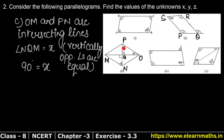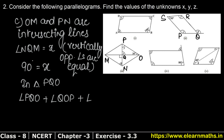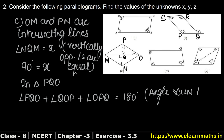If we talk about triangle PQO, this angle at Q is 30 degrees, so we can find the third angle y. In triangle PQO, the sum of three angles is 180 degrees — we studied this angle sum property in the last exercise. So angle PQO plus angle QOP plus angle OPQ equals 180 degrees.